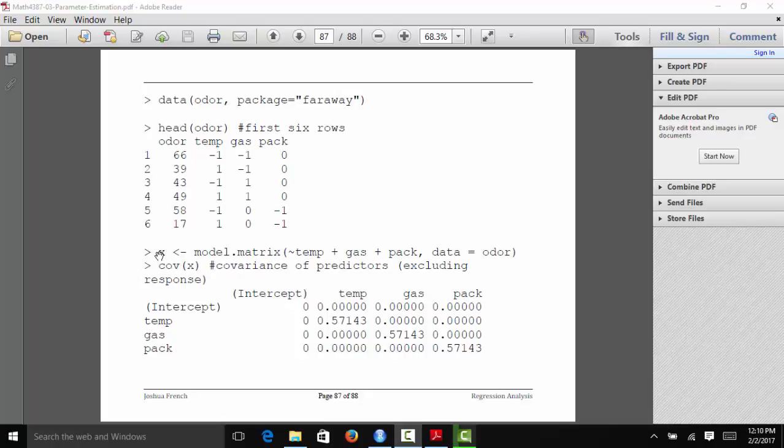We extract the X matrix that we're going to use to fit the models using the model.matrix function. Model.matrix basically extracts the X matrix from a model that you describe. We're going to have a model that has temp, gas, and pack as regressors. We're going to use the odor data set and extract the resulting X matrix that you would use for that particular model.